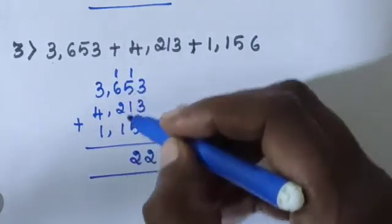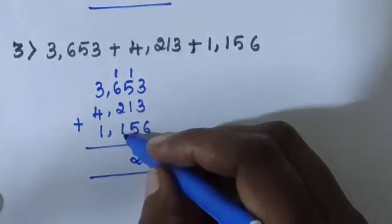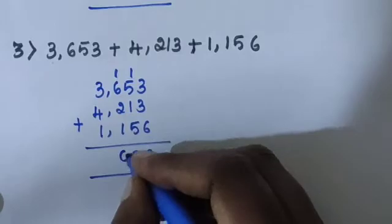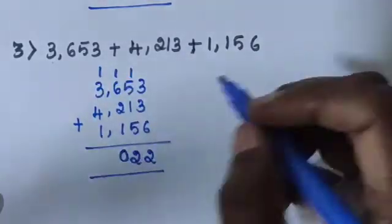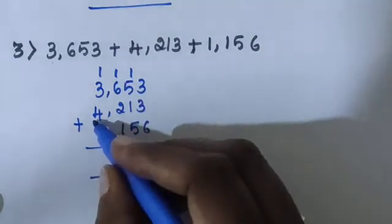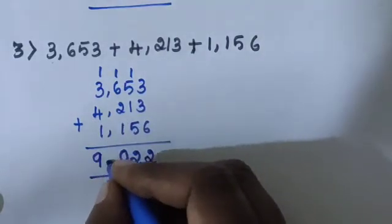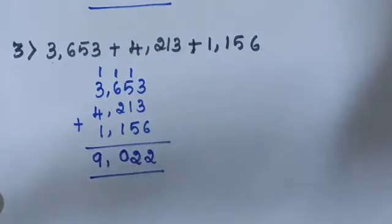1 plus 6 equals 7. 7 plus 2 equals 9, plus 1 equals 10. 10 gives 0 with 1 carry. 1 plus 3 equals 4. 4 plus 4 equals 8, plus 1 equals 9. Answer is 9022.